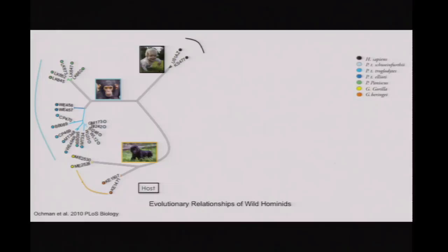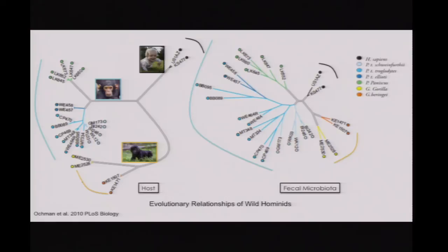One piece of evidence was given by the group of Phil Hugenholz, who studied evolutionary relationships in wild hominids. On this phylogenetic tree we see humans, two species of chimpanzees, and two species of gorilla. He then sequenced the fecal communities, and the fecal microbiota recapitulates the topography of the phylogenetic tree.